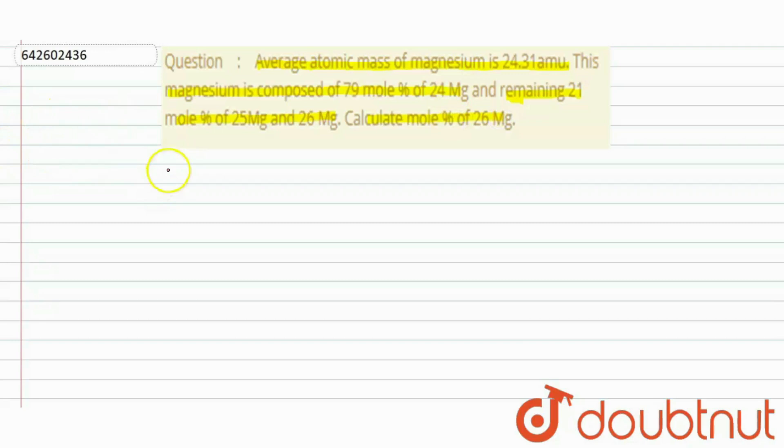So first we have average atomic mass. That is 24.31 amu.